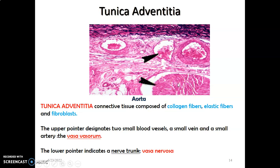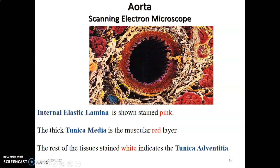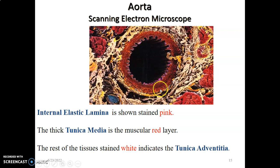This is an electron microscopic illustration of the aorta. You can appreciate the thick elastic tunica media, and the internal elastic lamina is staining pink. The thick tunica media is the red layer, and the rest of the tissue is the tunica adventitia.